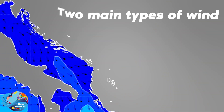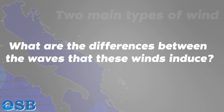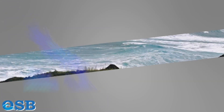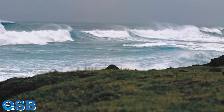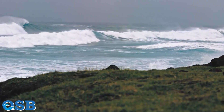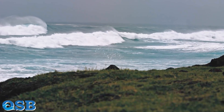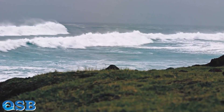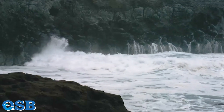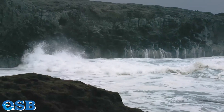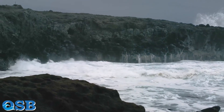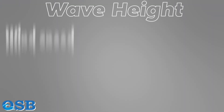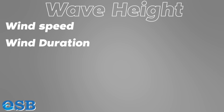In the Adriatic Sea, there are two main wind types that produce distinct waves. Bora is a cold, gusty, and often violent wind that blows from the northeast. It is characterized by a short fetch of approximately 100 kilometers, which leads to young and steep waves with a period of five to seven seconds. Wind speed, wind duration, and fetch — the distance the wind blows in a single direction — all influence wave height.